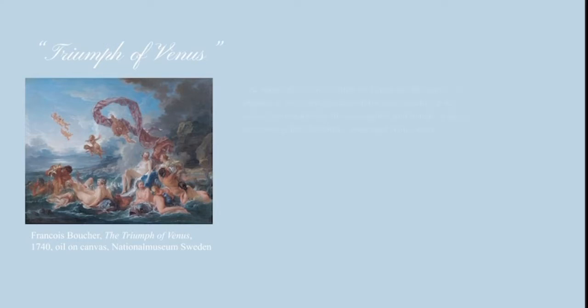Moving along to The Triumph of Venus by François Boucher, this art style is from the Rococo era. The same idea from The Birth of Venus — we see Venus, the goddess of love, being born from the sea, coming up in a seashell surrounded by sea nymphs and the naiads. The painting has a cool color palette associated with the era of Rococo. The specific painting was commissioned by Carl Gustav Tessin in the year 1740, and the artist modeled Venus after his wife. Nudity, especially in paintings revolving around mythology, was widely more accepted in the 18th century.